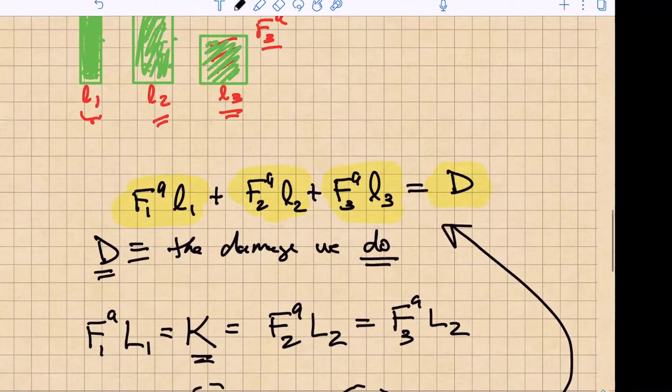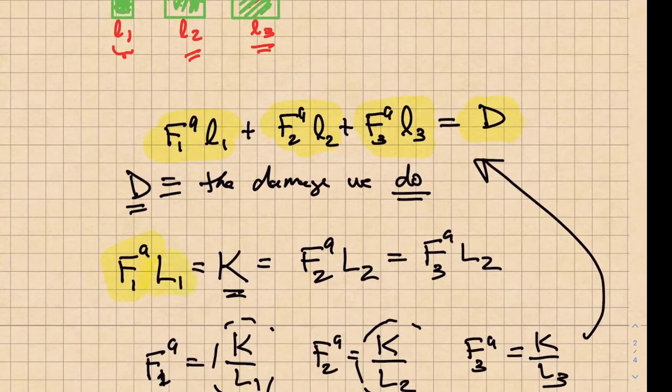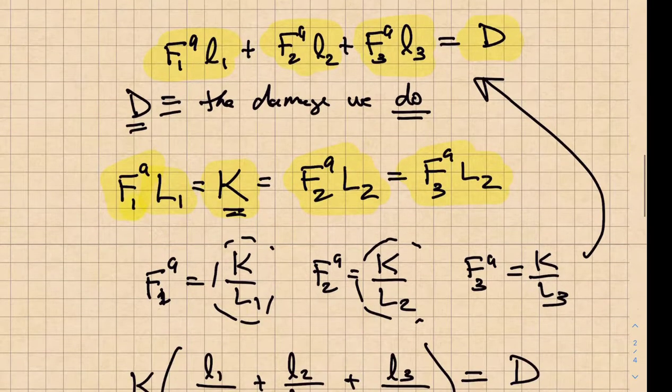So that means that we can take advantage of the fact that the force F1 to the a power times capital L1 hits that curve and so it's going to be equal to a constant. That same constant is equal to F2 to the a power times capital L2, which is equal to F3 to the a power times capital L3. And then we can replace each of those radial loads to the a power by K over capital L, where L is the lifetime associated with that load.